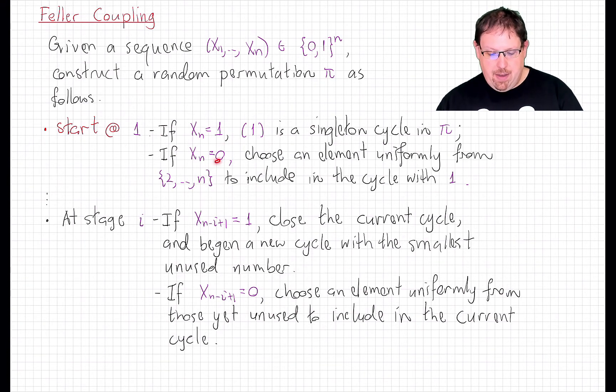On the other hand, if X_n is 0, then we say, no, 1 is not going to be lonely. There's going to be at least one other thing in its cycle. And we're going to choose uniformly at random from the remaining n-1 elements to put something in the cycle with 1. And now we proceed and look at X_{n-1}.